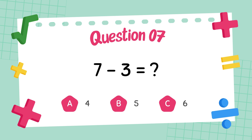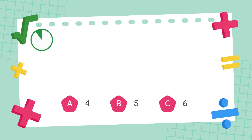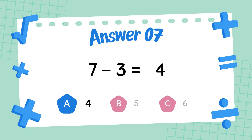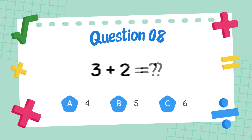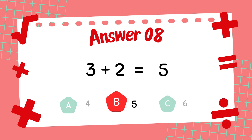What is 7 minus 3? The answer is 4. What is 3 plus 2? The answer is 5.